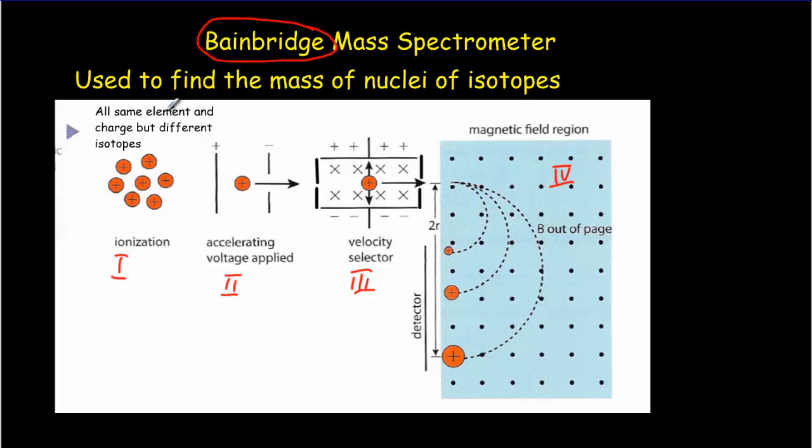Essentially what happens is you've got a bunch of atoms, they're all the same element. They go through an ionization process, so they've all got the same charge, but we've got some different isotopes in there, and that means we've got some different masses. These charges are put through some accelerating plates, that's going to give them some kinetic energy, some speed, and they're going to have a fairly wide range of speeds.